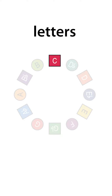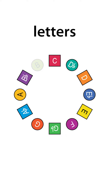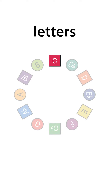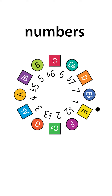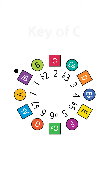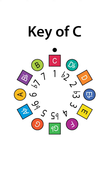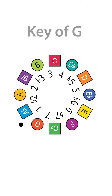In other videos I talk about how these letters and numbers are used, but in a nutshell the letter names for notes are fixed, so C, for example, is always C in any key, D is always D, etc. While the numbers can shift from one key to the next. So in the key of C, C is 1, Db is b2, D is 2, and so on.